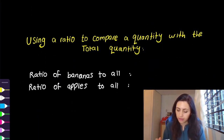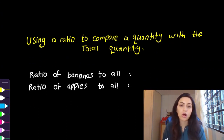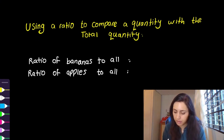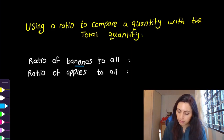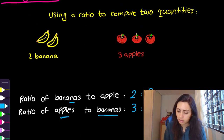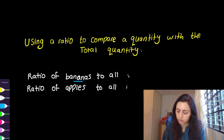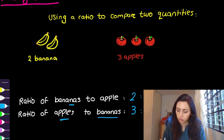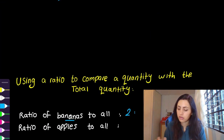Then we're going to talk about using a ratio to compare a quantity with the total quantity. For example, we have the ratio of banana to all. Because we said banana first, we write the number of bananas first, which is two. And 'to all' means the total number of fruits — we have two bananas and three apples, so the total is five.